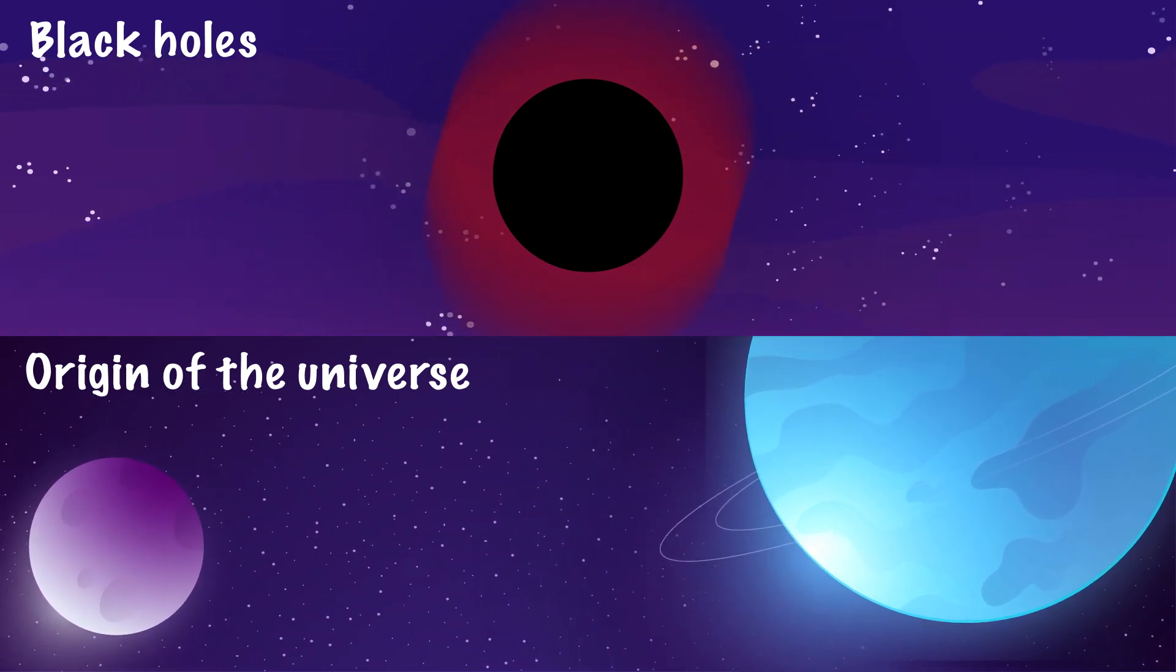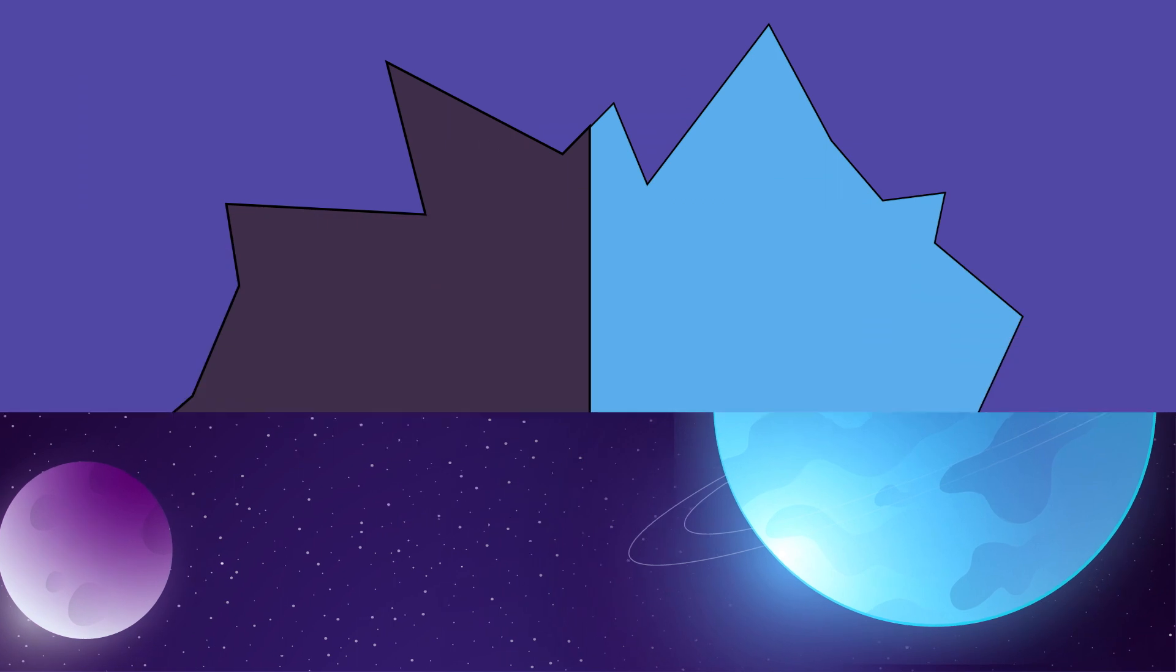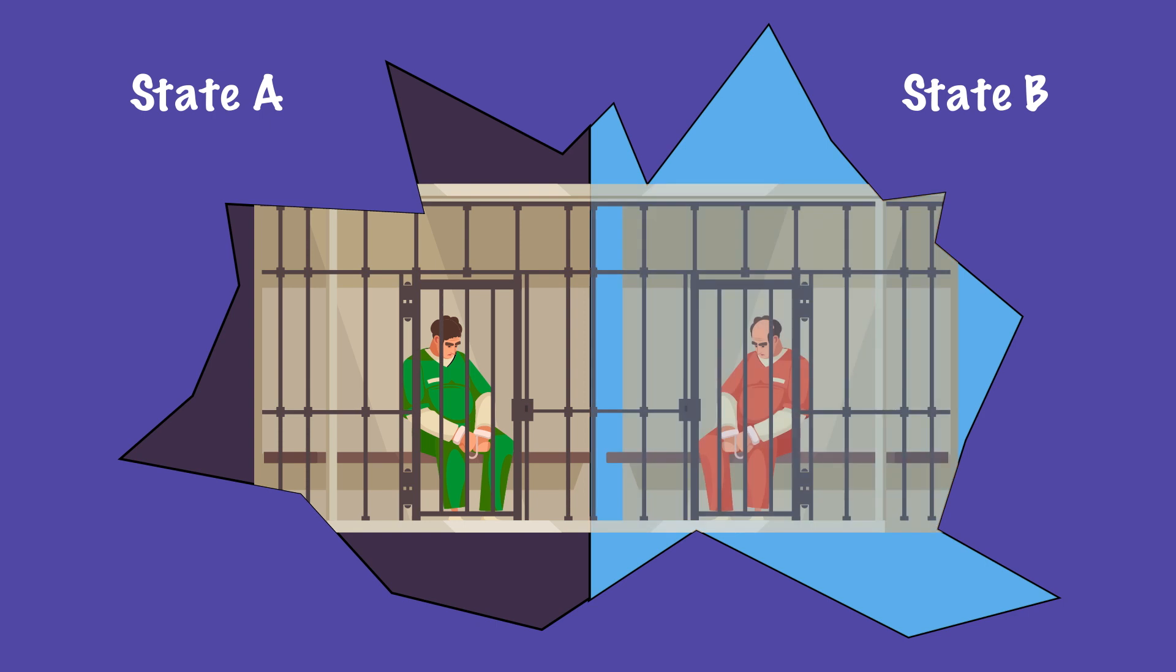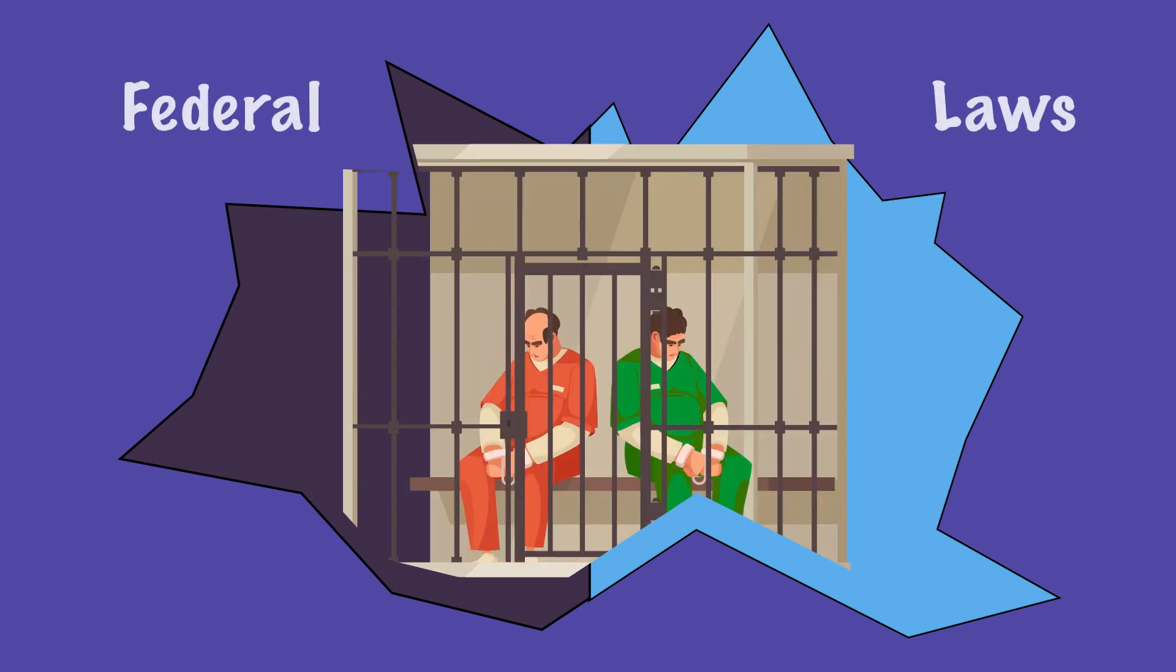We can compare this to a country whose states have completely different laws to each other. Which, in most cases, would be fine. Someone committing a crime in state A would be judged based on state A's laws, and someone committing a crime in state B would be judged based on state B's laws. But what would happen if someone committed crimes in both state A and state B?